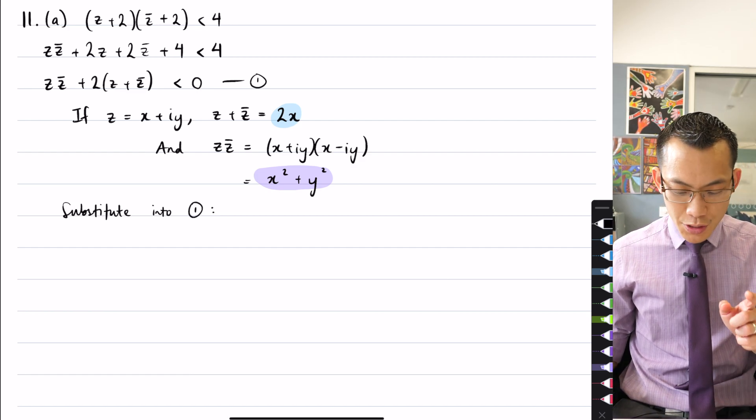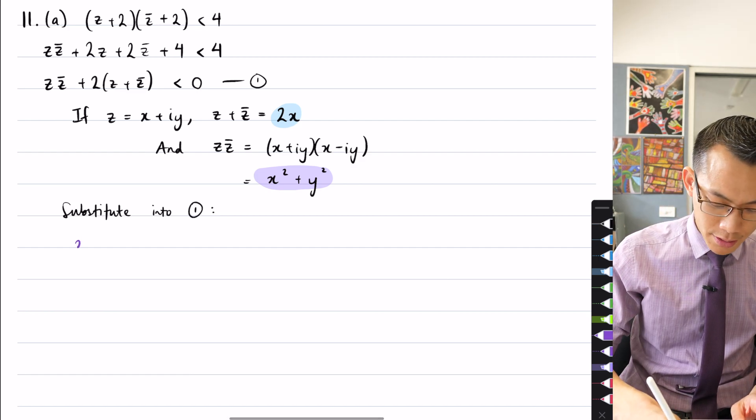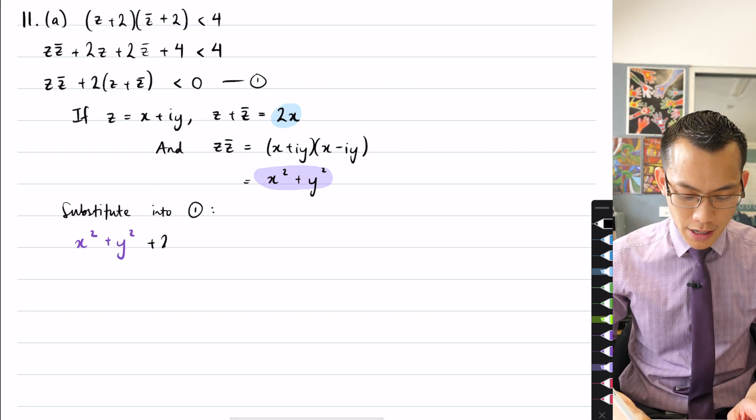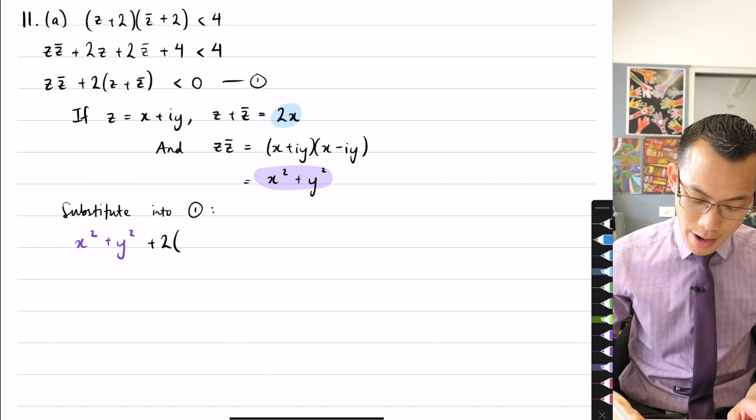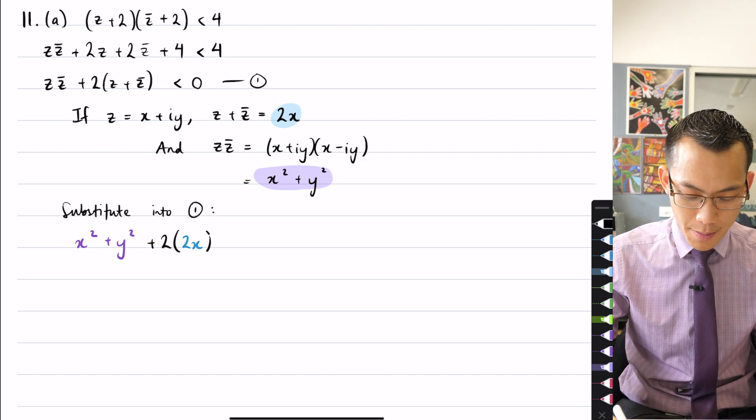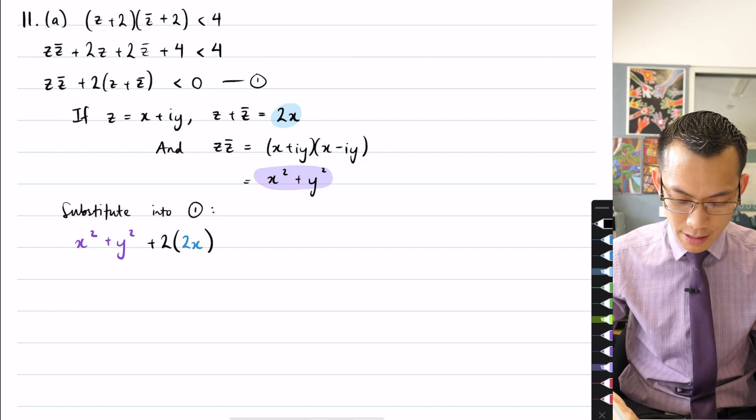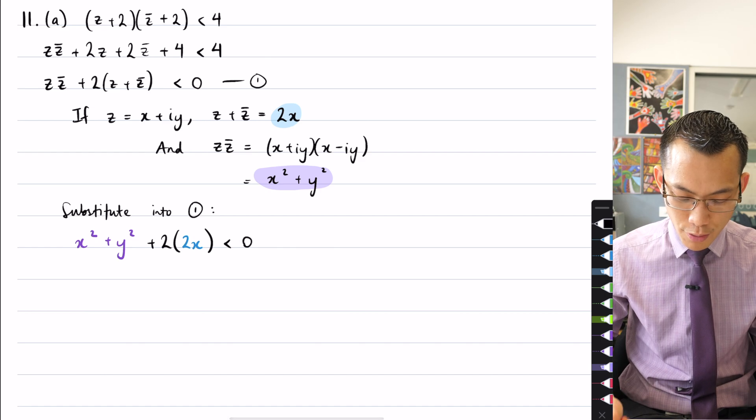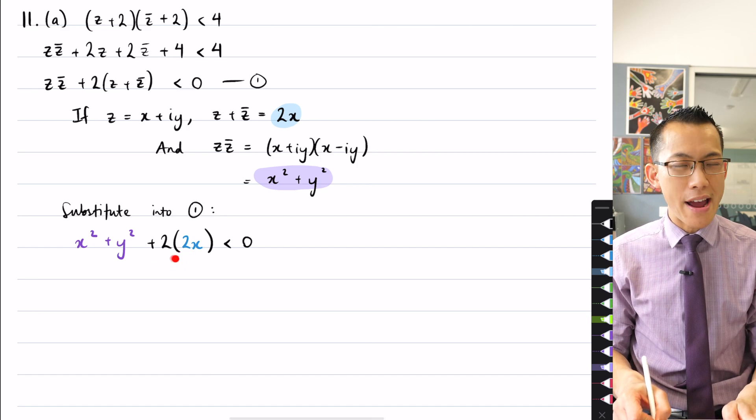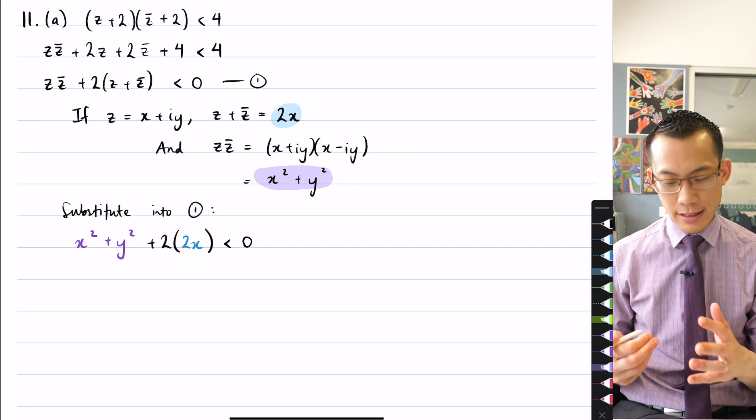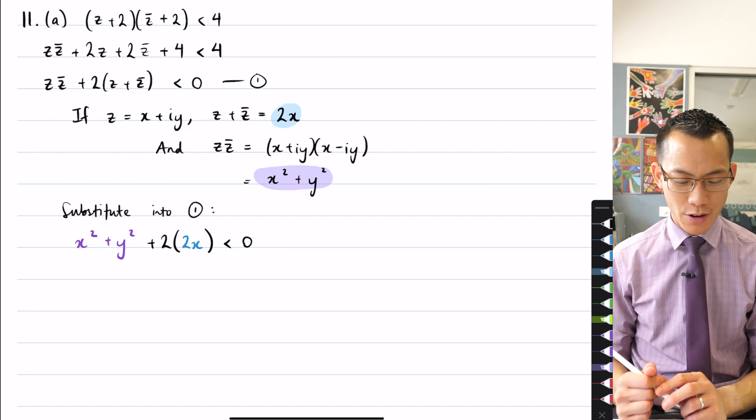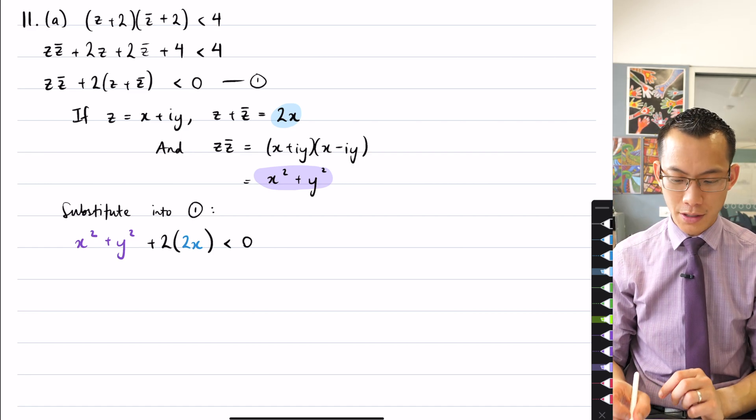All right, here we go. So the Z Z bars hanging out the front, so I'll write that as X squared plus Y squared, I'll just put the colors in to make it really clear for you, and then I'm doubling, what am I doubling? And the answer is 2X. That's what I get when I add my complex number with its conjugate, and that is less than 0. Okay, now I can see at this point I've got the X squared, and this is a 4X, and you can clearly see with the X squared and the Y squared, being that they're added together, there's going to be a circle, or some subset of circles because I've got an inequality.